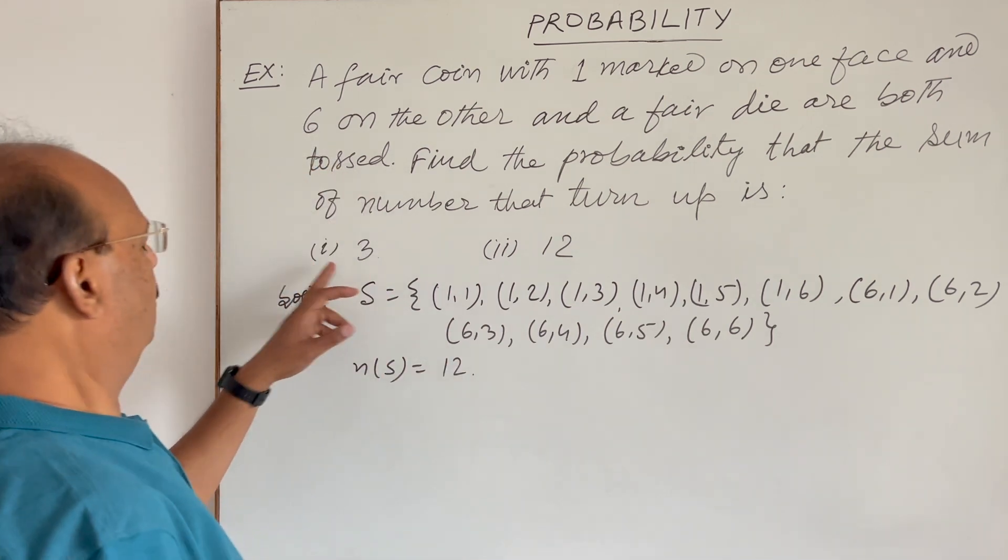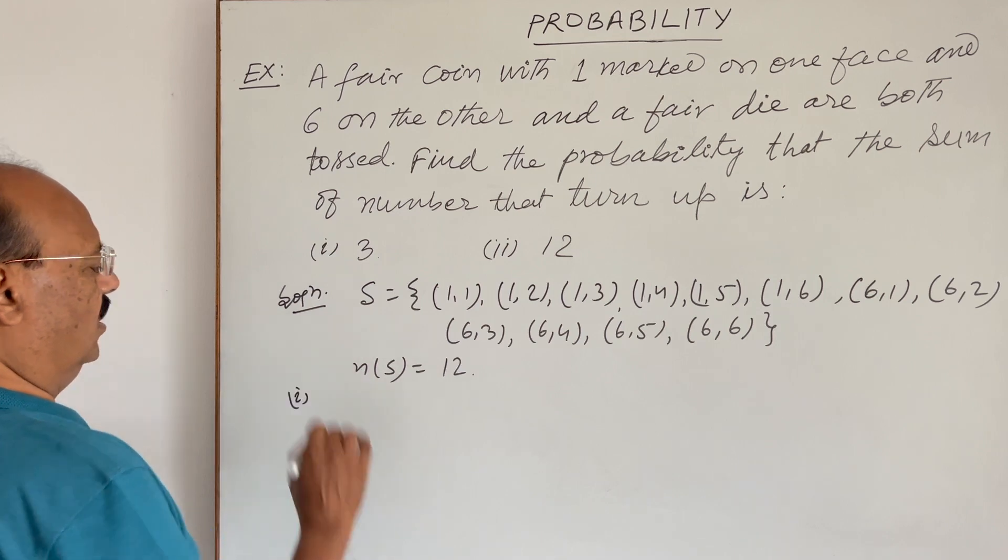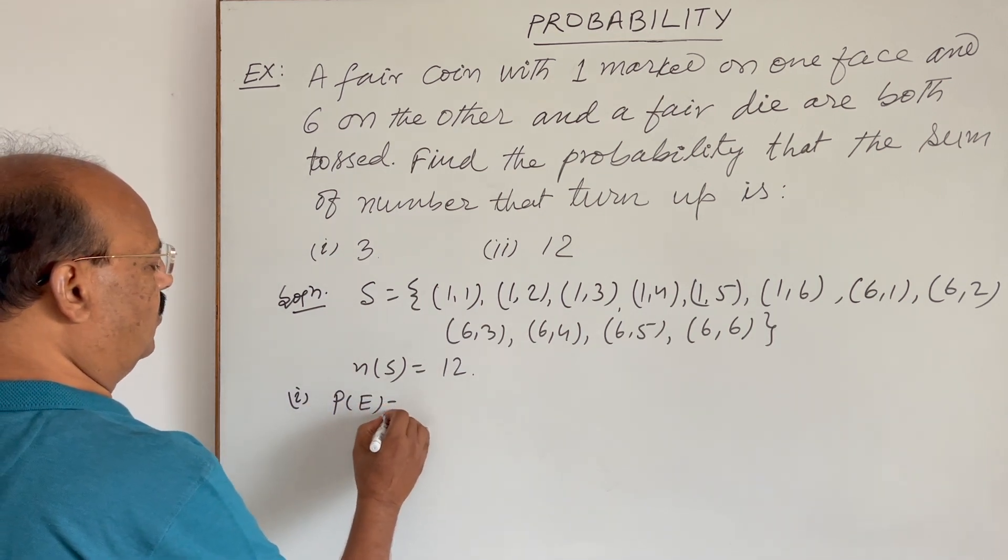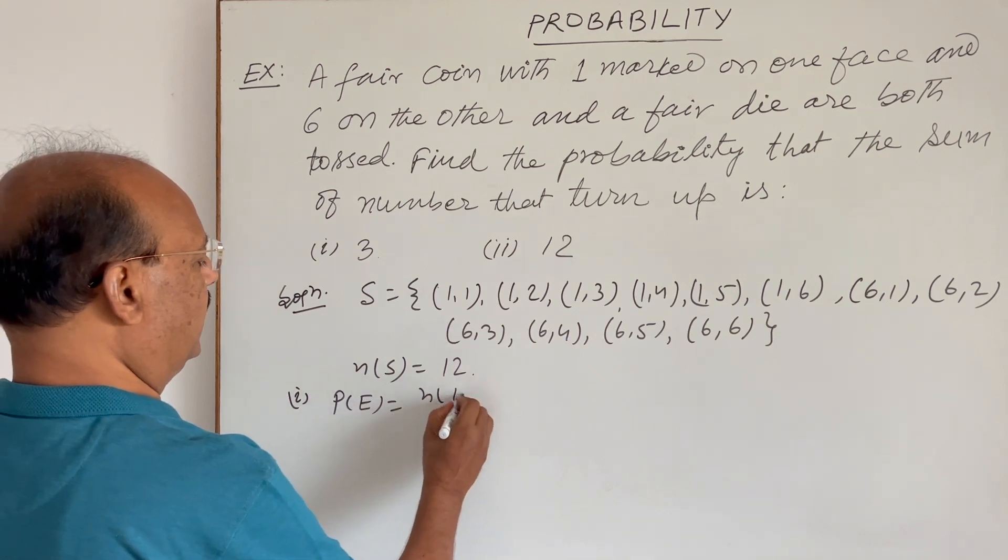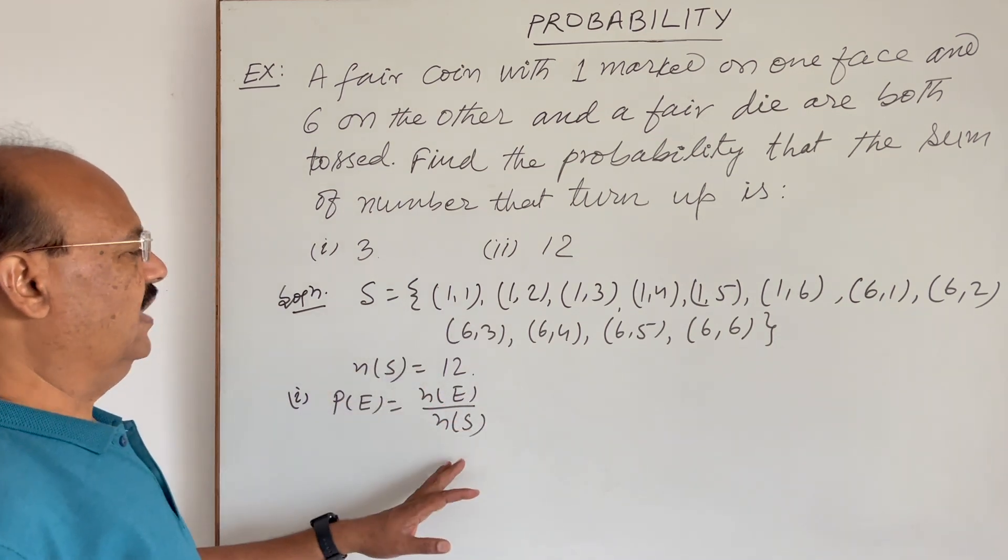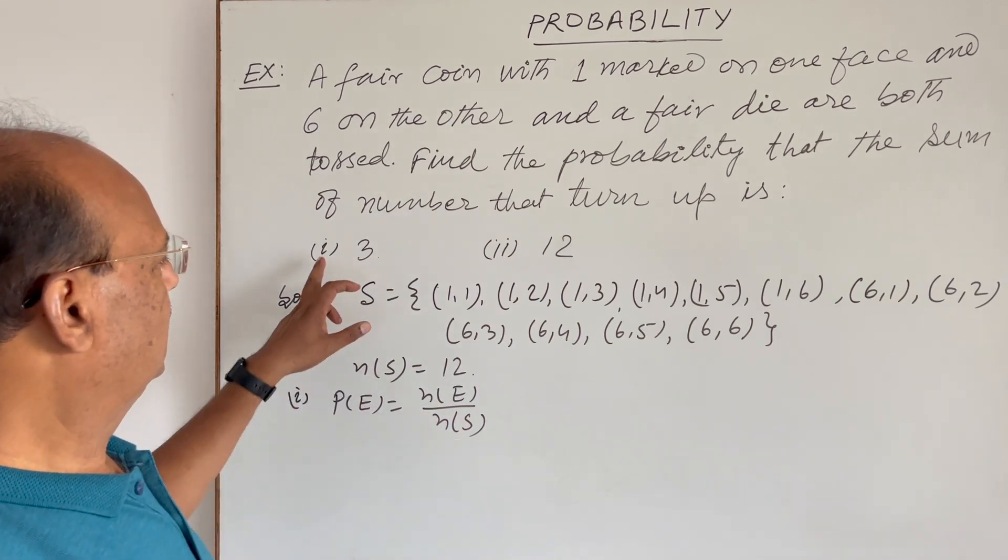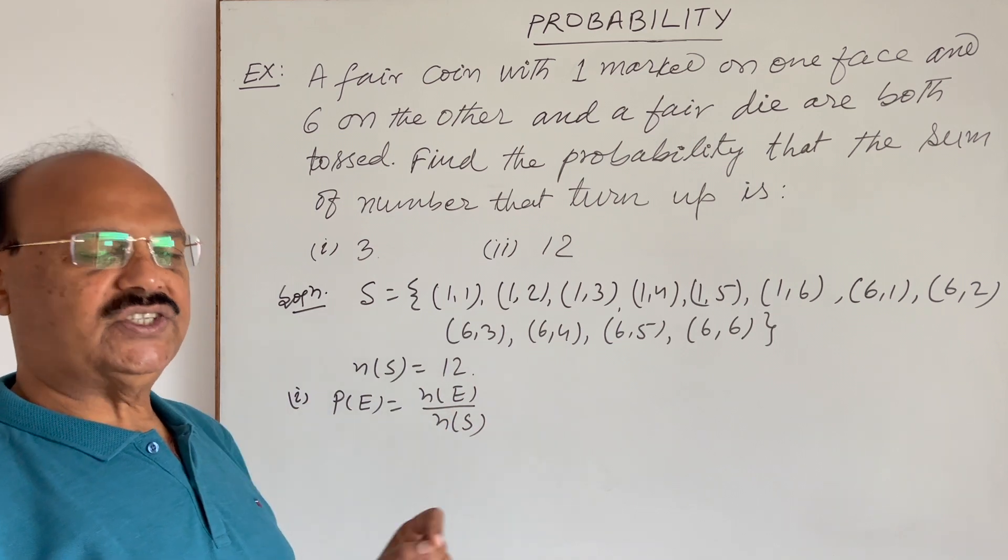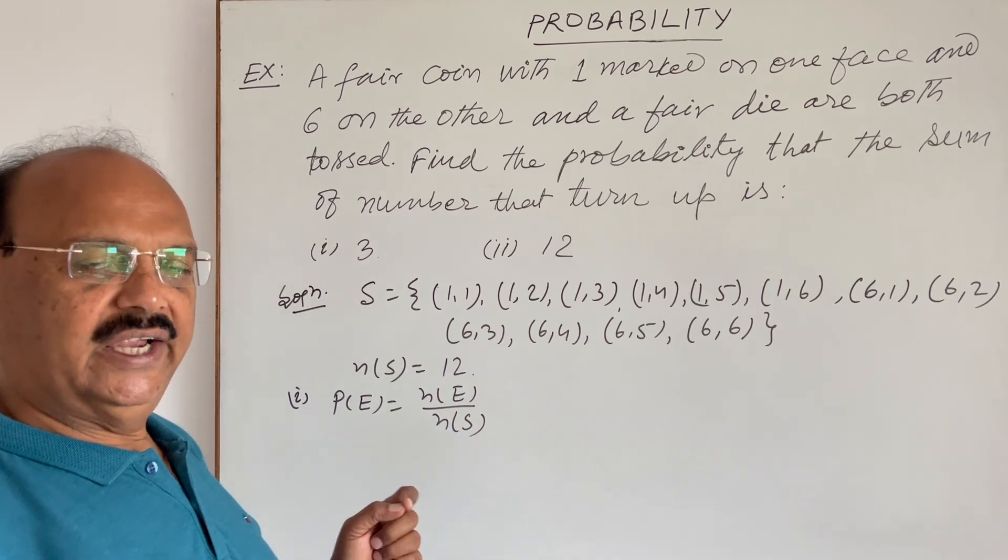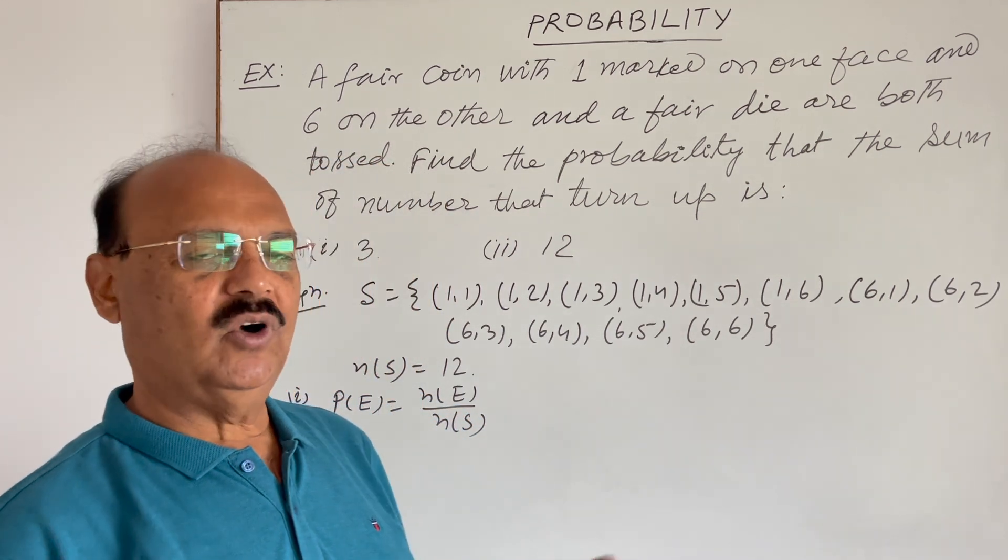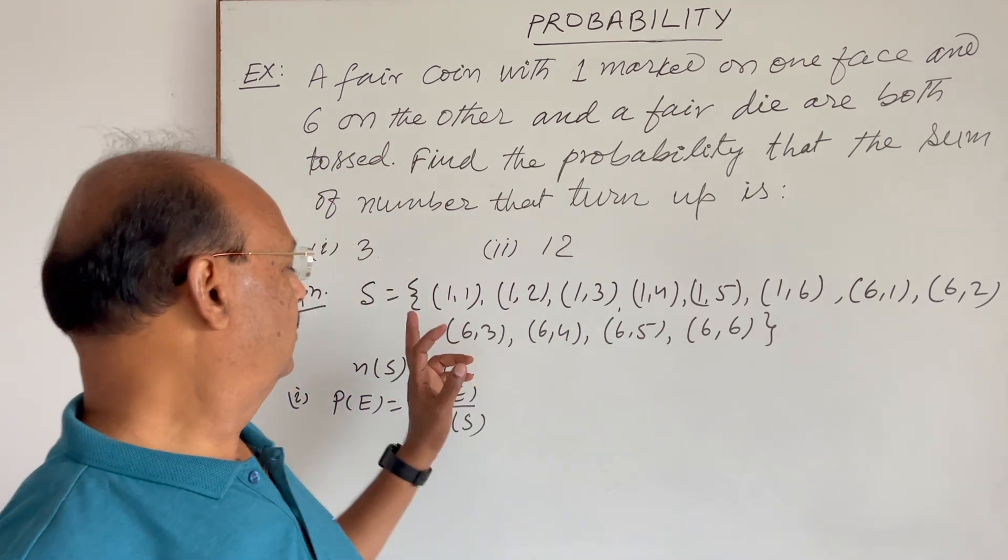Now, let us see the solution of first part here. So, we know that probability of any event, we use this formula everywhere, this is n(E) divided by n(S). n(S) is twelve and what will be n(E)? Sum of outcomes, means first outcome from coin and second outcome from dice. Sum of these two outcomes would be three.